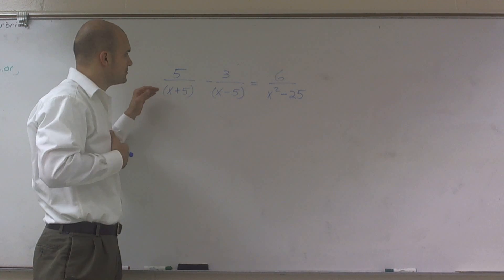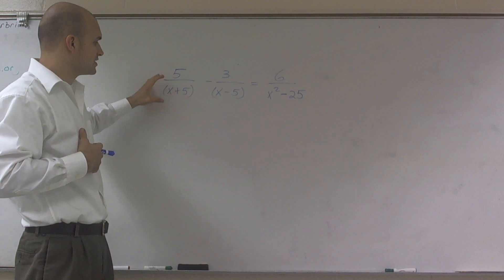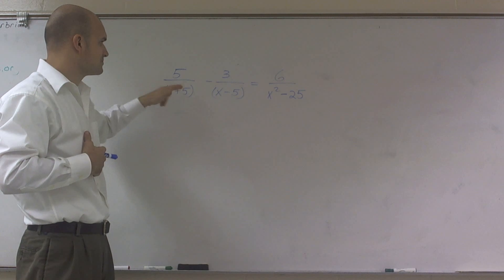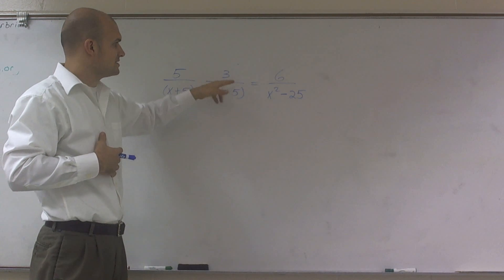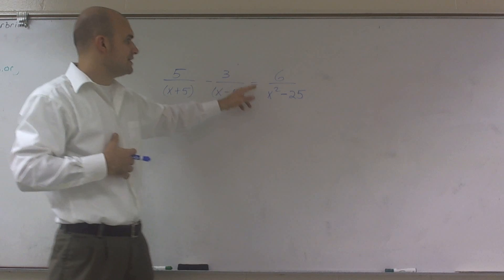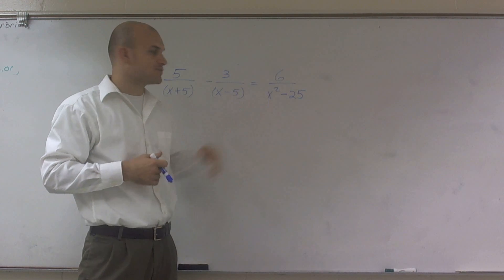OK, what I'd like to do is show you how to solve this equation. We have 5 divided by x plus 5 minus 3 divided by x minus 5 equals 6 divided by x squared minus 25.